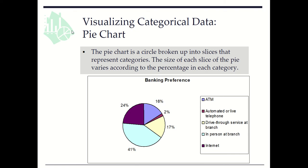In this video clip, we learn how to use a pie chart to visualize data of one categorical variable. By the name, the pie chart is a circle broken up into slices that represent categories. The size or area of each slice varies according to the percentage in each category. So if we want to show the percentage of each category, it is ideal to use a pie chart.